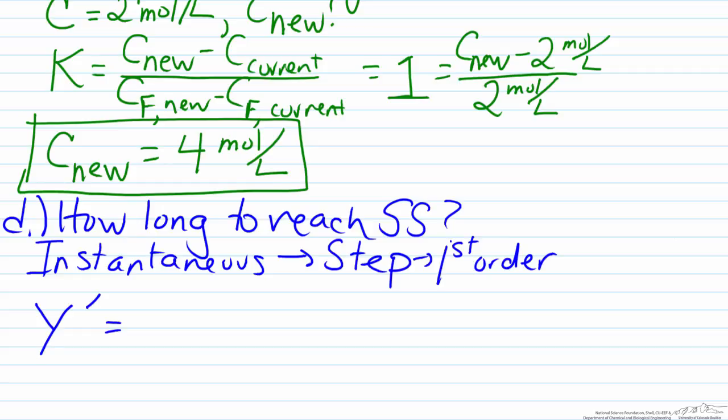So it can be defined as the relationship y prime equals K, the steady state gain, multiplied by M, and this represents the magnitude of the step, multiplied by 1 minus e to the negative t, which is just the generic time variable, over tau, the time constant.